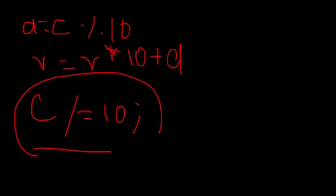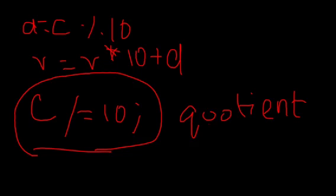What you need to pay attention to is the C mod 10, D is C mod 10. R is equal to R into 10 plus D. And, C by equal to 10. This does integer division on C and returns the quotient. I am sorry. Q, U, O, quotient.